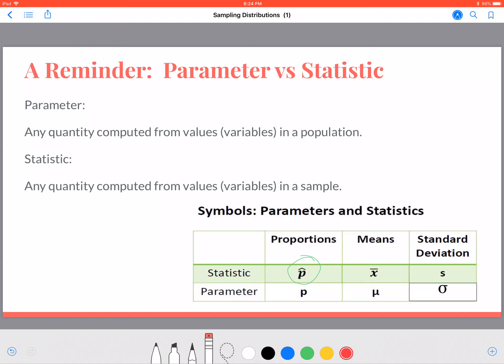The first is parameter. Remember, a parameter is when we're taking variables and computing values such as the mean for the entire population. Those values we're computing demonstrate the entire population because we have all the data to compute a parameter.